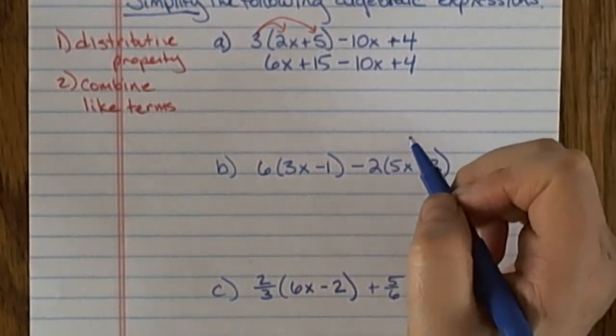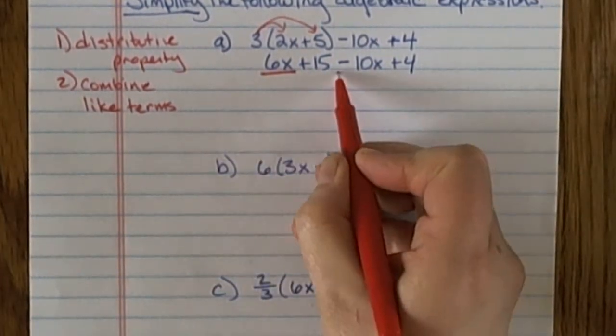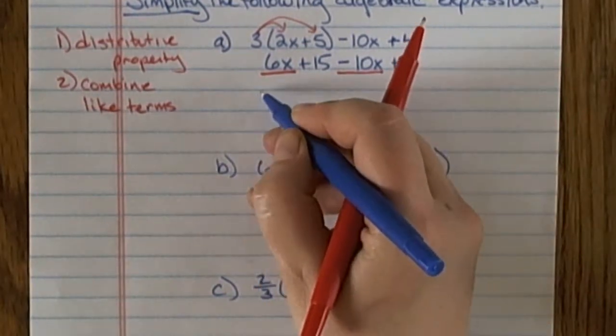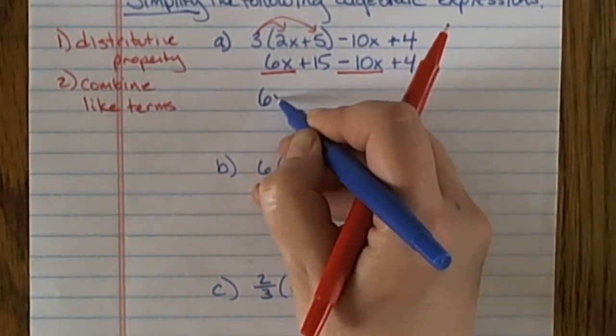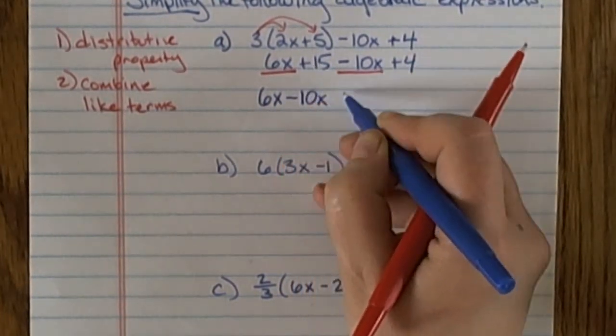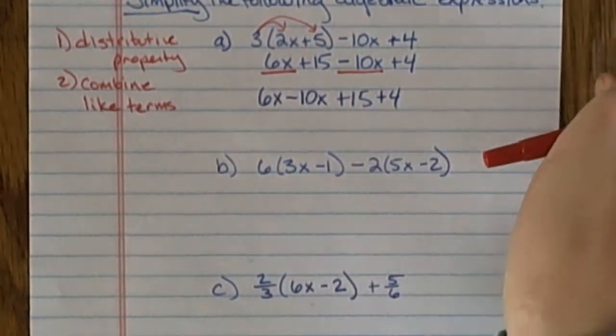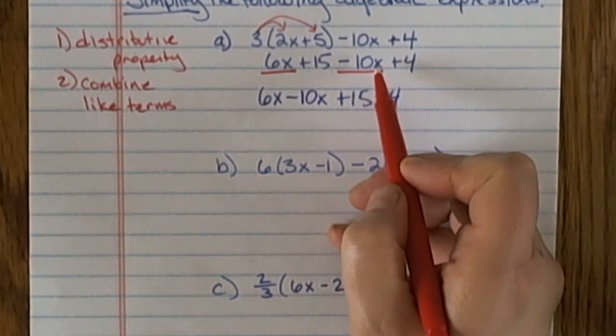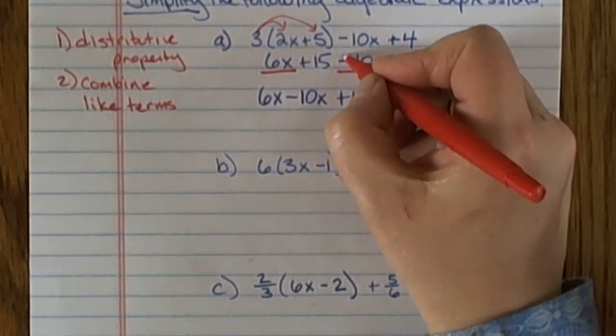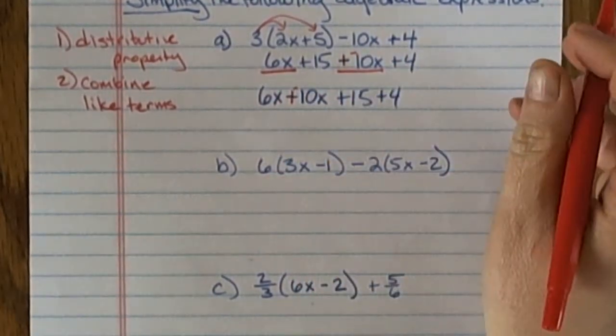Now I'm looking for like terms, and the like terms here are 6x and minus 10x. I can move those so they're together. I have 6x minus 10x and plus 15 and plus 4. Remember I'm moving this 10x with the minus sign in front of it. I could also change it to plus a negative, and then I can see when I move it, it is plus a negative 10x.